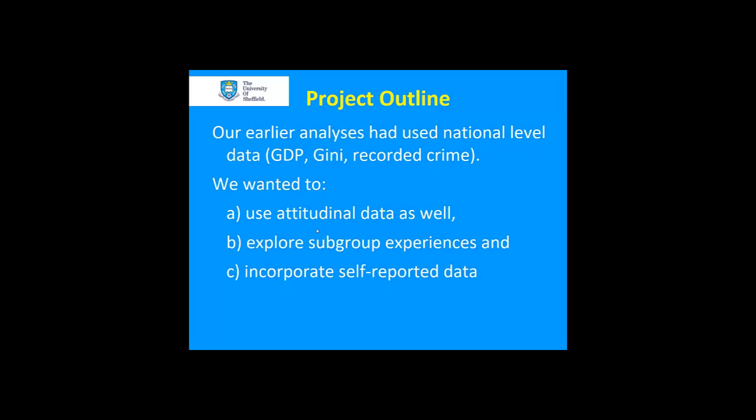We did all of that because our earlier analyses had really relied on data collected at the national level — things like GDP, the Gini coefficient, and recorded crime trends. What we wanted to do was to explore the way shifts that took place in the 1980s and 1990s were also related to attitudinal shifts — how social attitudes were either shaped by or shaped thinking about social and economic policies — and we also wanted to explore subgroup experiences and incorporate self-reported data.